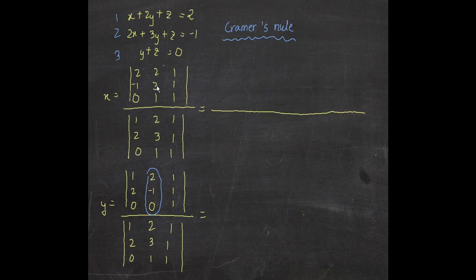Let's calculate for x. When calculating the numerator, it's similar to computing a determinant. We take two and multiply: three into one minus one into one. Keep in mind you must write three into one first, then minus one into one — if you reversed it as one into one minus three into one, the answer would change. Follow this format carefully.